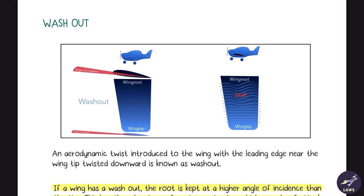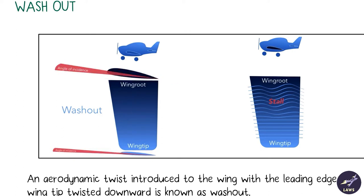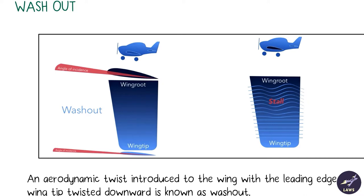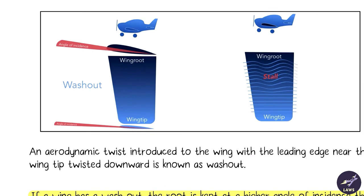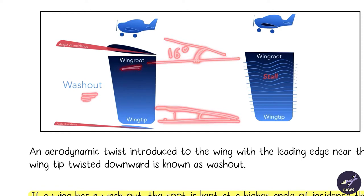The next method is washout. In washout, the angle of incidence at the wing root is kept greater compared to the wing tip. The angle of incidence is the angle between the longitudinal axis and the chord line. Near the wing root, the chord line is angled further up compared to the wing tip — the wing is slightly twisted. Because the chord line is slightly higher at the root, it reaches 16 degrees angle of attack first.